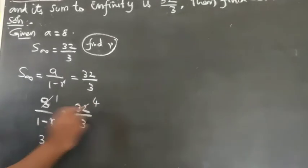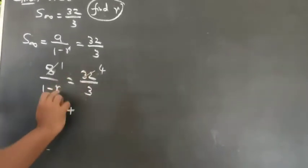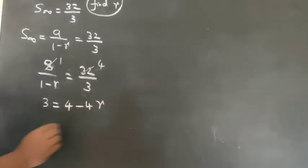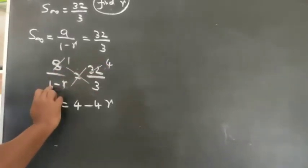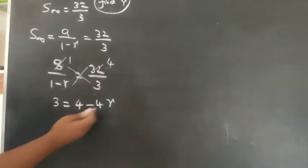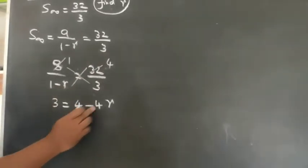1 into 3 equals 3, equals 4 into 1, which is 4, minus 4r. Easy to see, 1 into 3 equals 3. Cross multiply: 4 into 1 is 4, 4 into r is 4r. That's r, minus 4r.